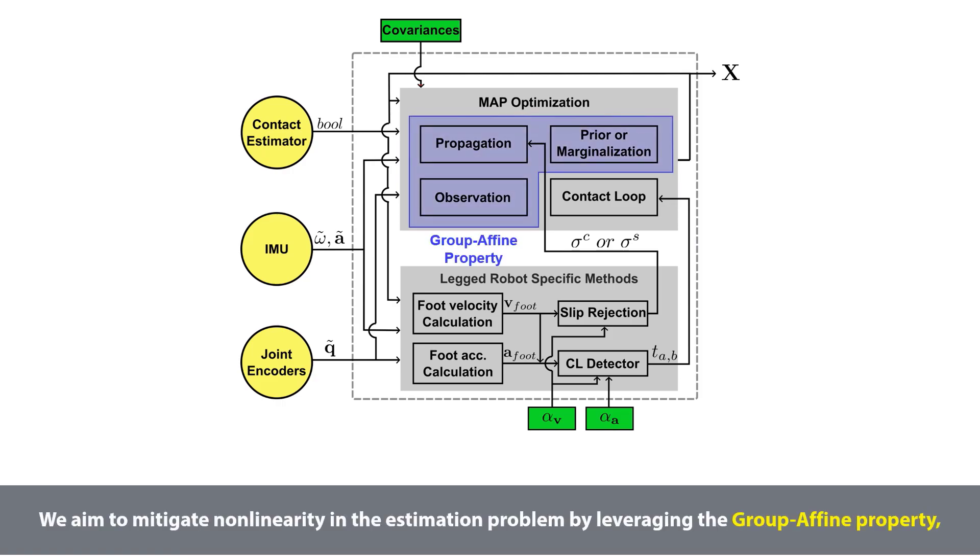This is the overall structure of the proposed estimator framework. We aim to mitigate nonlinearity in the estimation problem by leveraging the group affine property, which brings the state independent Jacobian of the residual function.